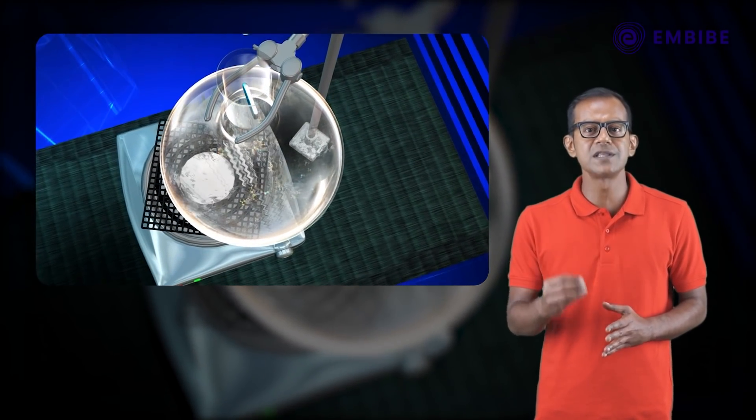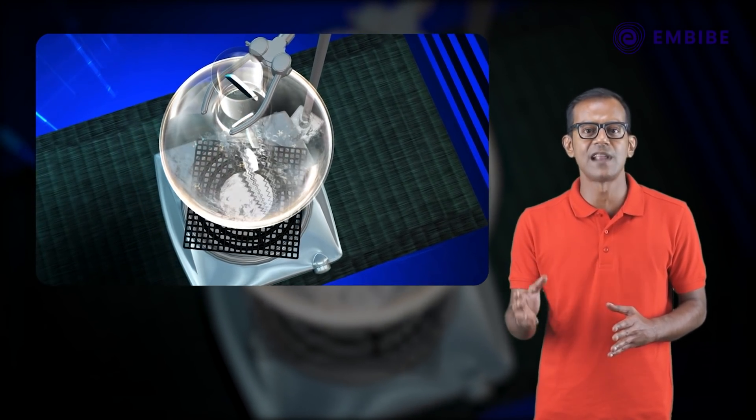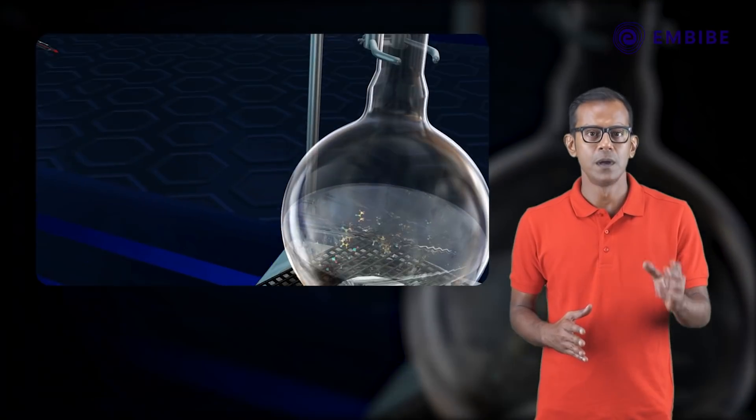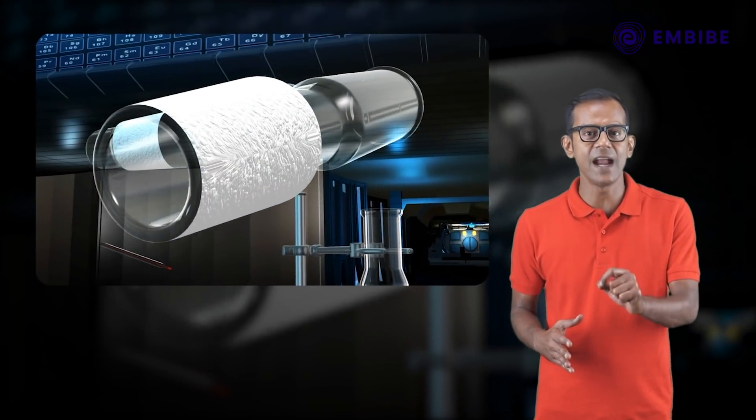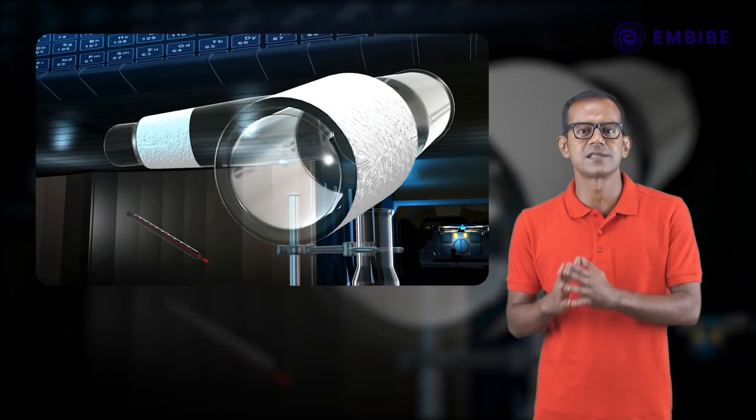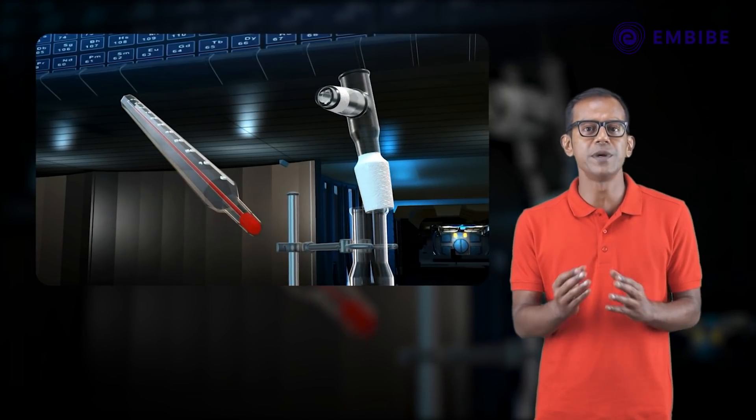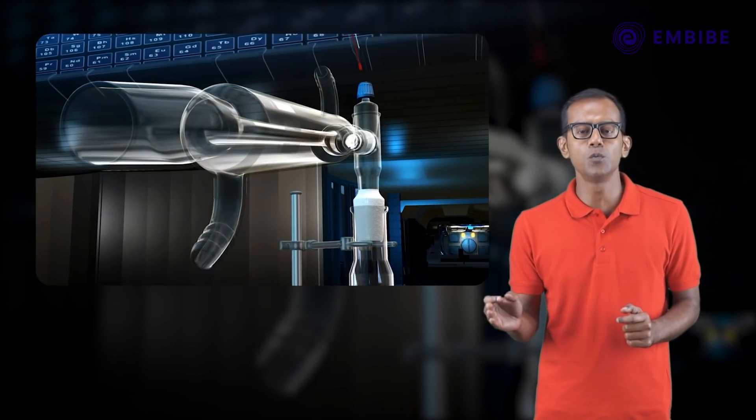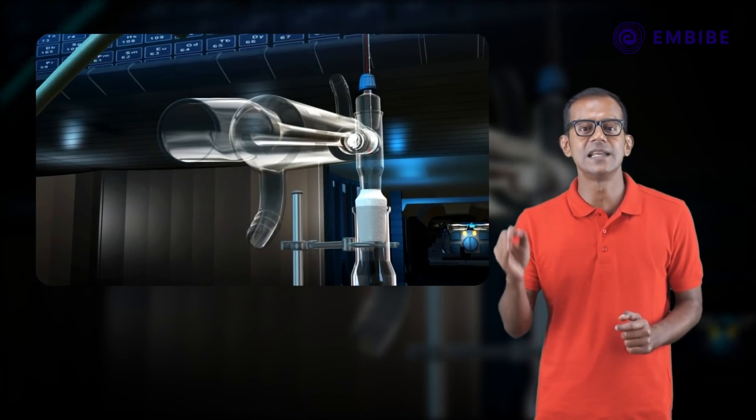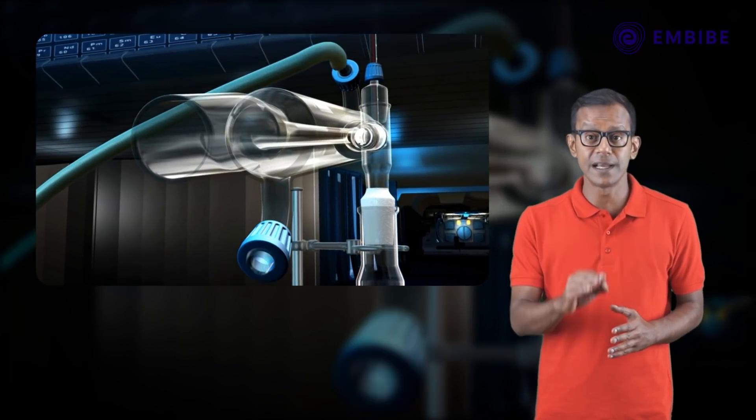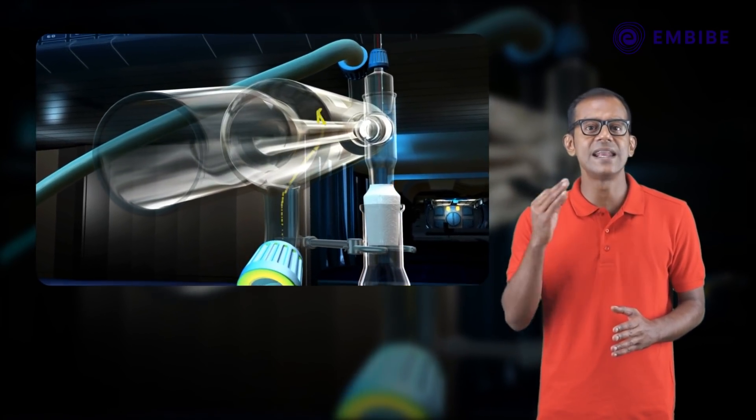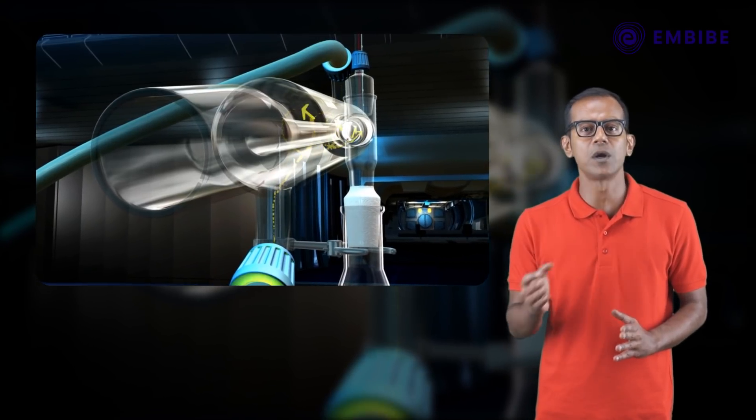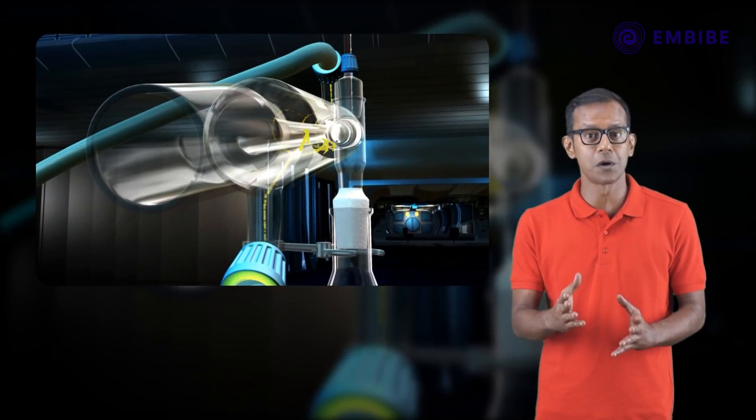Add some porous pot chips into the flask. Position a hot plate underneath. Now connect a distilling head to the RB flask. Join a thermometer to one end and a condenser tube to the other end of the distilling head.